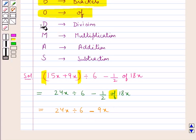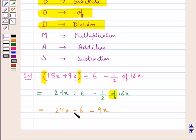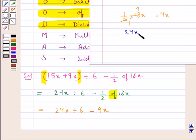In the next step we do the division. We have 24x divided by 6. Now 6 times 4 is 24, so this equals 4x. So this is equal to 4x minus 9x.